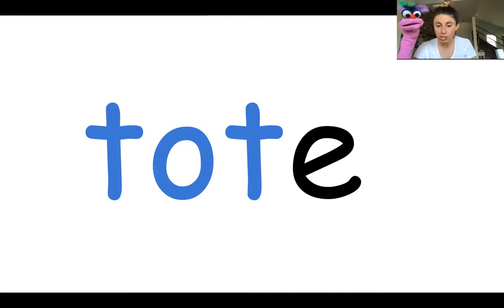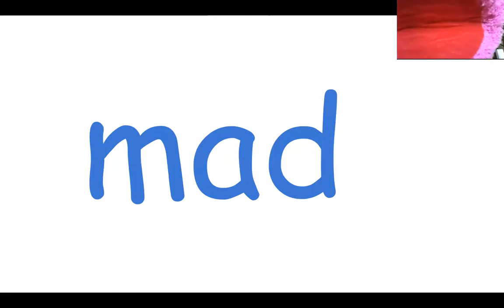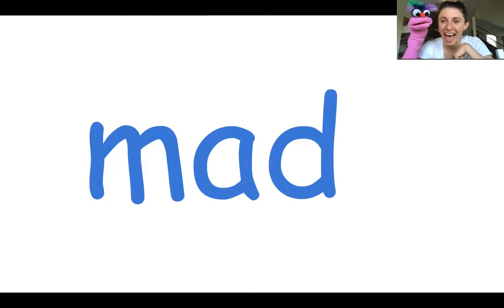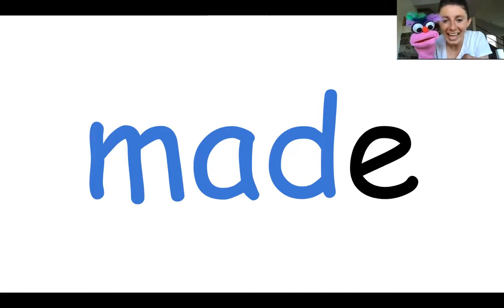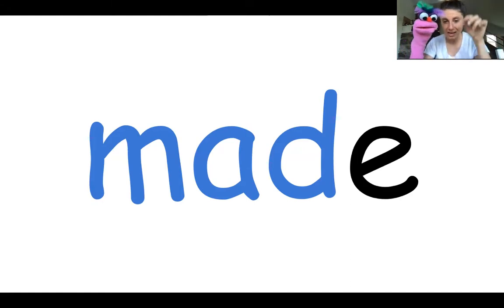Let's read that word — 'tote.' That's awesome! Let's look at the next one. Can you read it for me, Rosie? MAD. Okay, 'mad' — you guys can read that word. A is saying its short sound: 'ah.' But if sneaky E comes in the back, she's going to say her name. There he is! Now A is going to say its name. Let's try it — MADE. Mad turned into made! That's super cool.